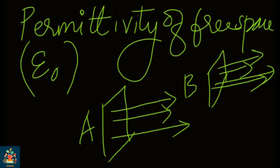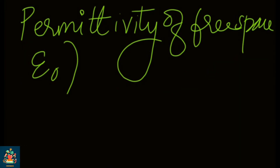Here you can see there are four electric field lines. That is the material's permittivity — in other words, the capacity to pass electric field lines through them. So material-wise, permittivity value varies. This is a general idea, and this is the symbolic representation of epsilon. So permittivity value is represented in the form of epsilon.